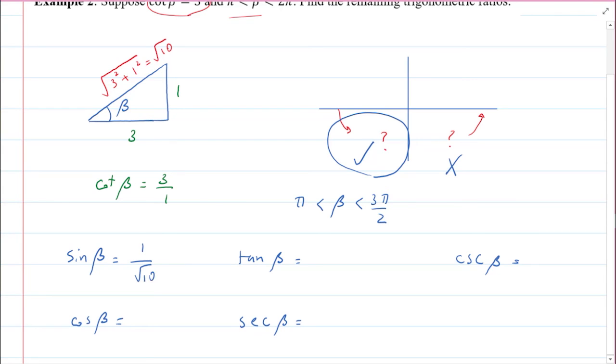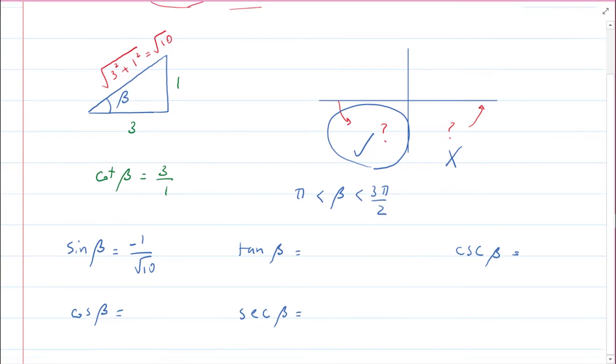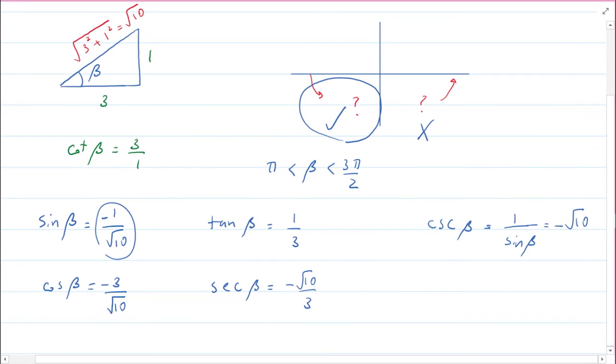So sine is adjacent, 1 over root 10, opposite over hypotenuse. At the same time, I know I'm in the third quadrant, so sine must be negative. Cosine is adjacent over hypotenuse, and I also know that cosine is negative in the third quadrant. Tan is opposite over adjacent, and tan is positive in the third quadrant. Secant is 1 over cosine, so all I need to do is find the reciprocal of this fraction, so that would be negative root 10 over 3. And cosecant is 1 over sine, so that would be negative root 10.